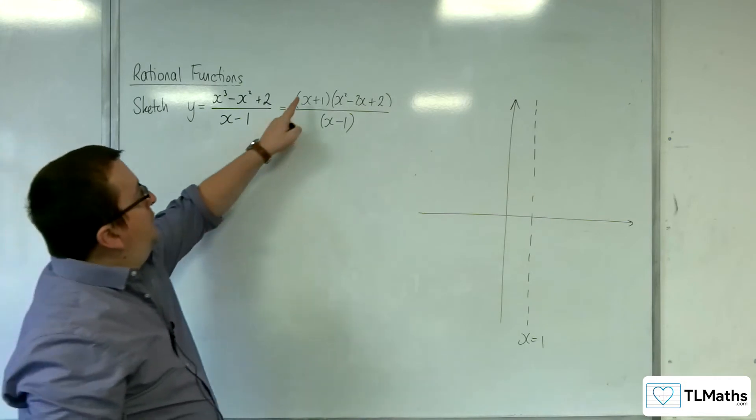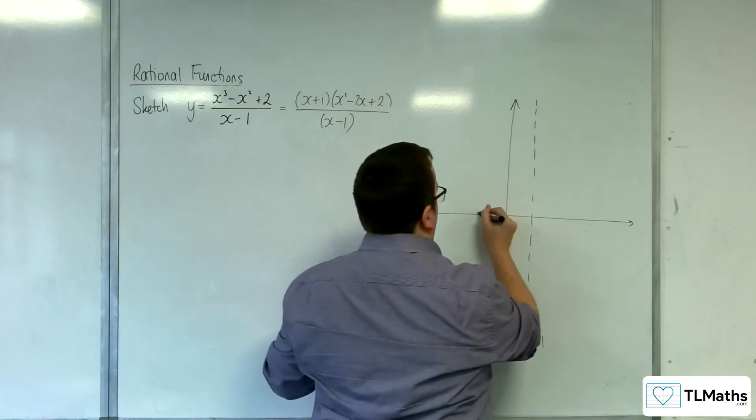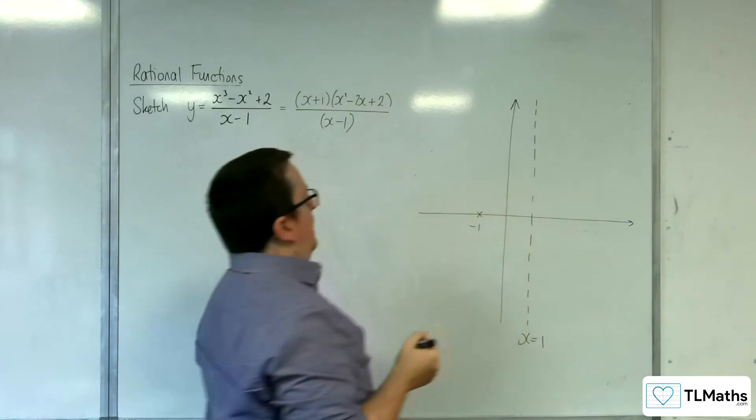And from this I can tell that it's crossing through the x-axis at one point at minus 1.